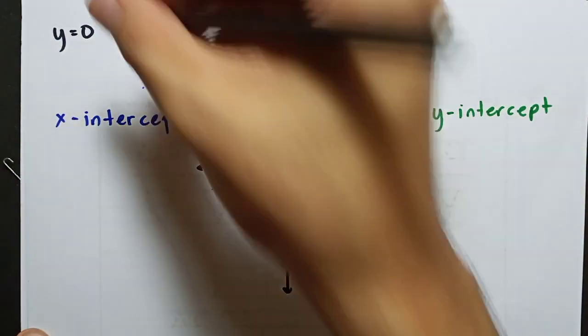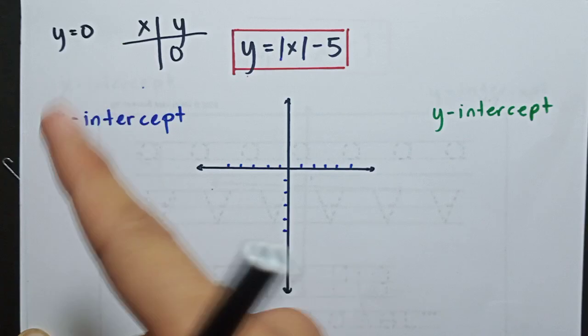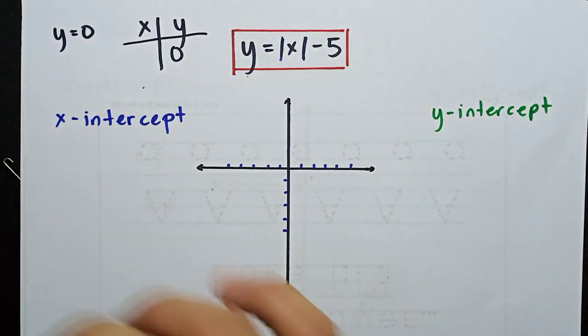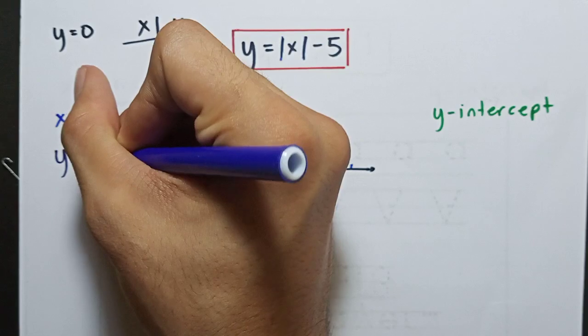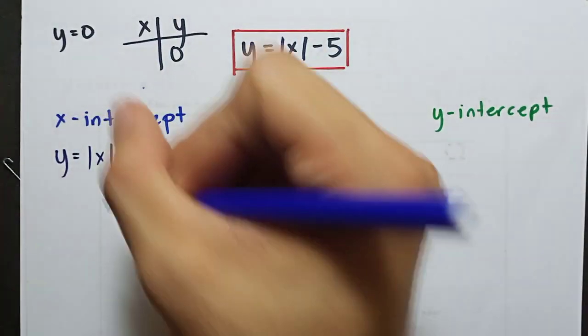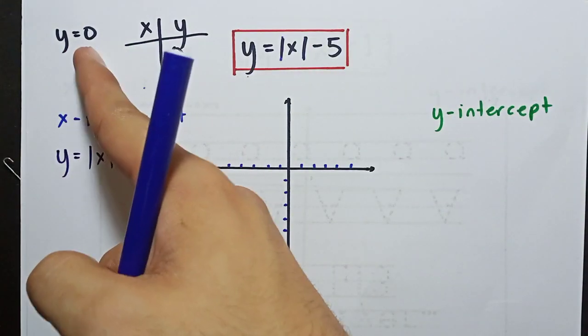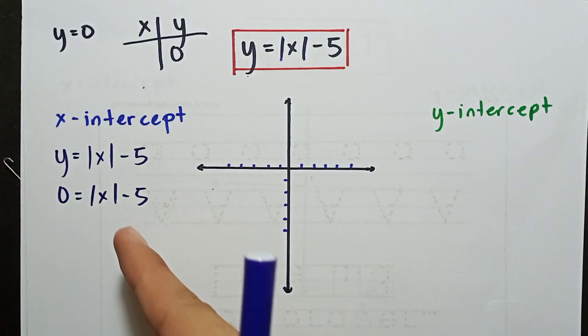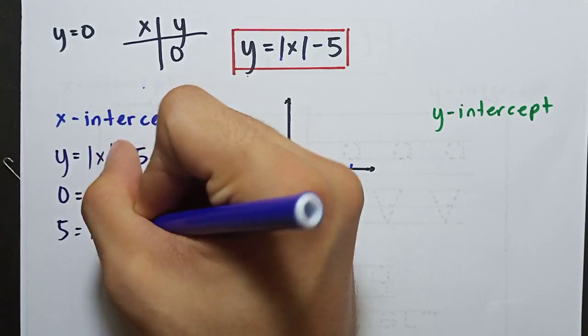So let's equate y equals to 0. Then, when y is 0, here's the table: x, y. Our y needs to be 0. To find the x-axis, when y is 0, what is the value of x? That's what we'll find. We need to go back to our equation, y equals the absolute value of x minus 5. Y equals the absolute value of x minus 5. Y needs to be 0. So 0 equals absolute value of x minus 5. Then, addition property of equality, add 5 both sides. So it becomes 5 equals the absolute value of x.